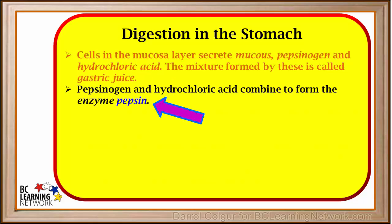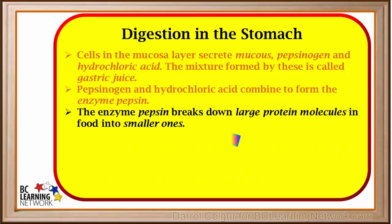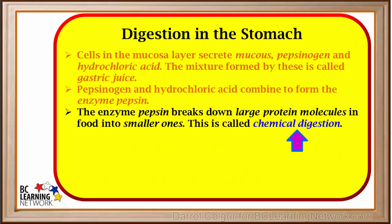The pepsinogen and HCl combine to form an enzyme called pepsin. Pepsin helps break down large protein molecules in food into smaller ones. These small protein molecules are broken down further as the food passes through the intestines. Breaking down protein molecules is a chemical reaction, so this process is called chemical digestion. Enzymes are needed for all types of chemical digestion in our body, and different enzymes break down different types of food.